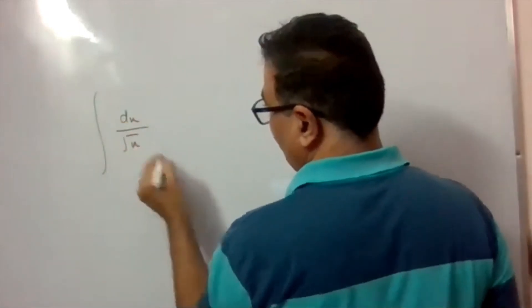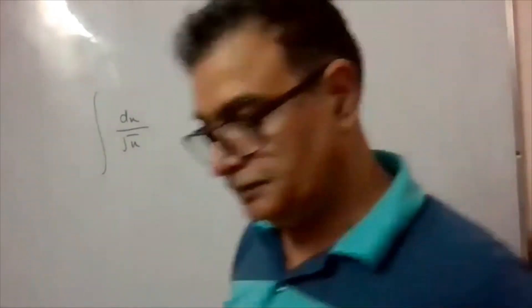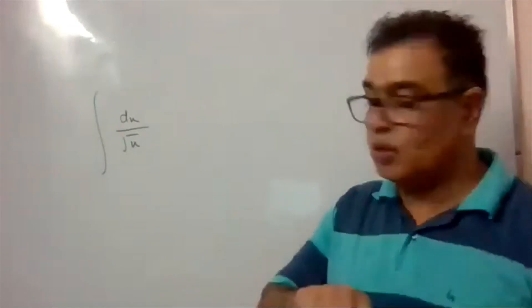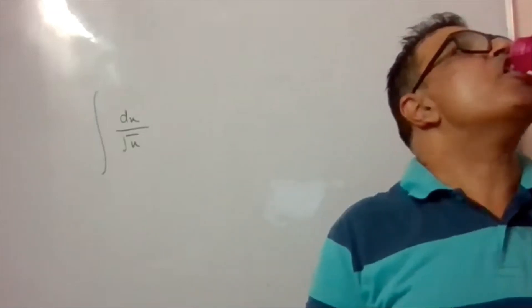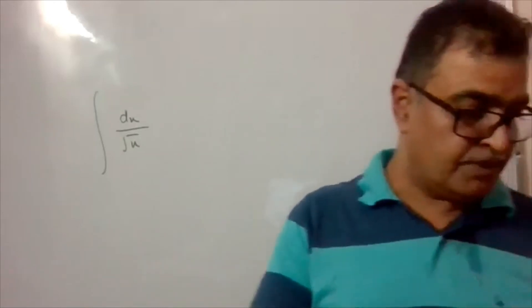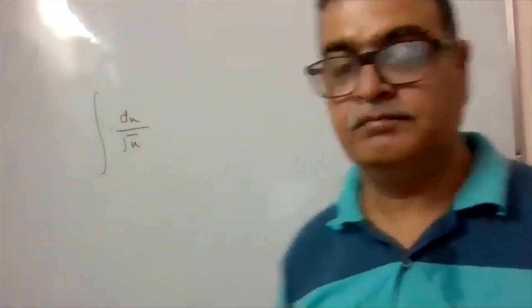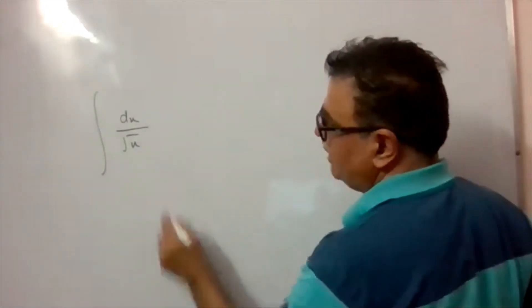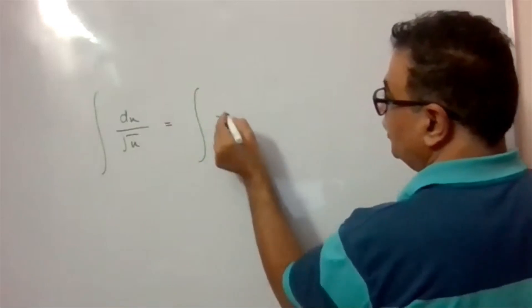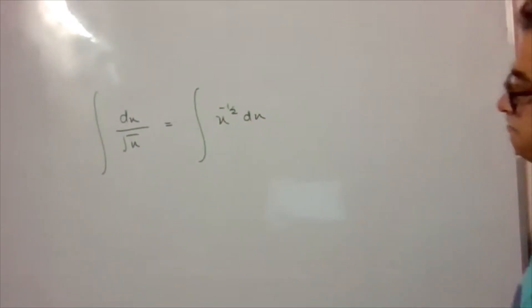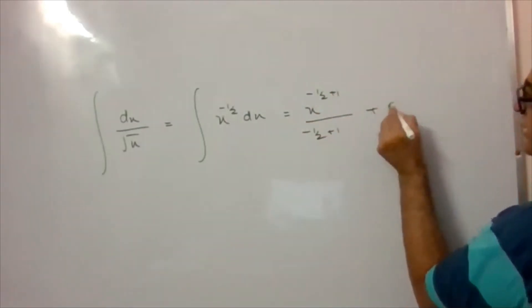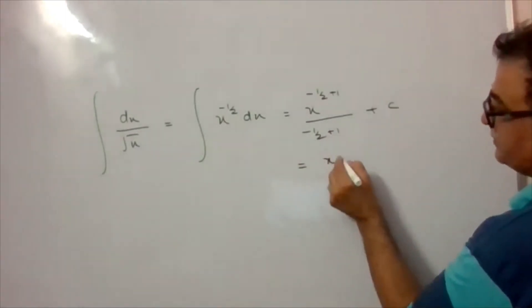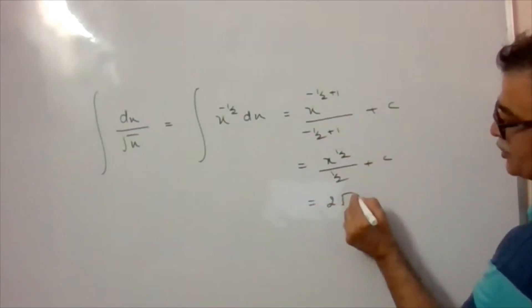Next question: integrate dx/√x. Writing 1/√x as x^(-1/2), applying the formula: x^(-1/2 + 1)/(-1/2 + 1) + C = x^(1/2)/(1/2) + C = 2√x + C.